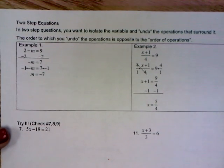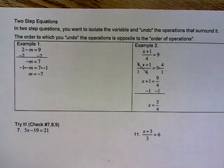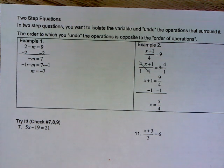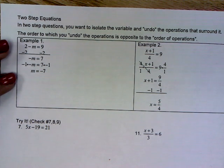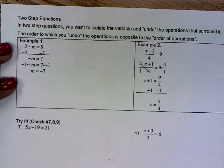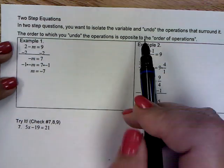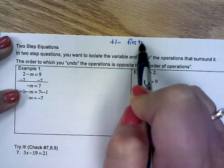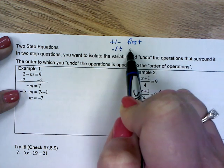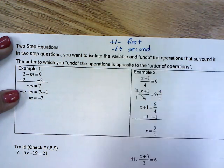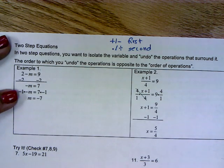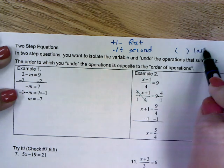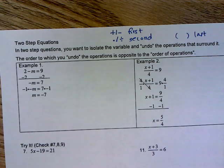In our two-step equations, it just means I have 2 steps that I have to do. I still want to isolate my variable and undo all the operations around it. When I undo my operations, I'm working order of operations in reverse, which means I'm always going to add or subtract first, then multiply or divide second. And if I have a parenthesis, I'd work that last, because I'm working order of operations backwards.